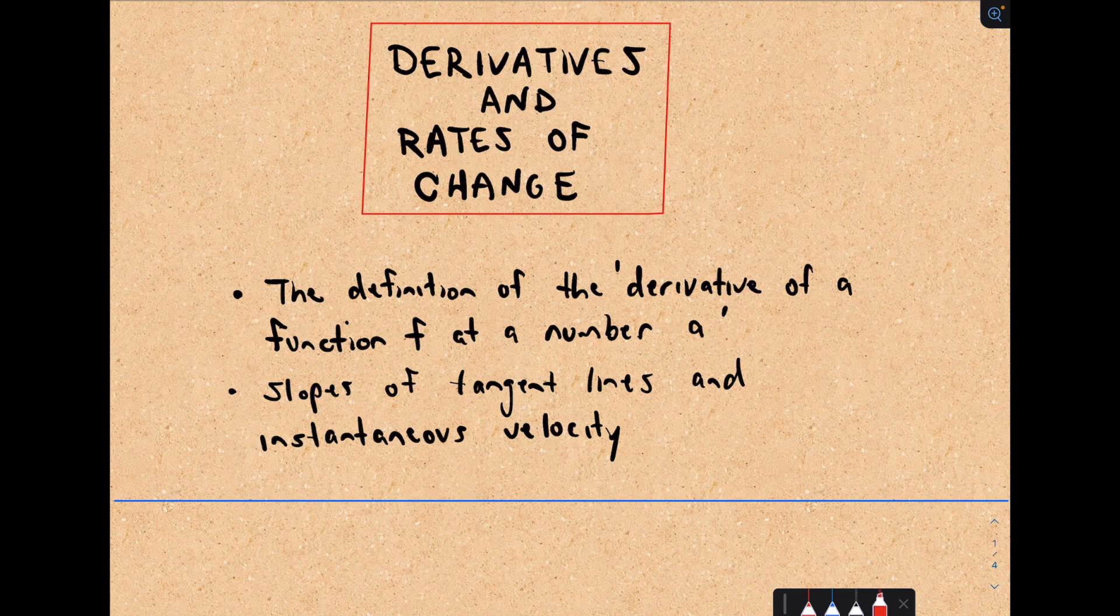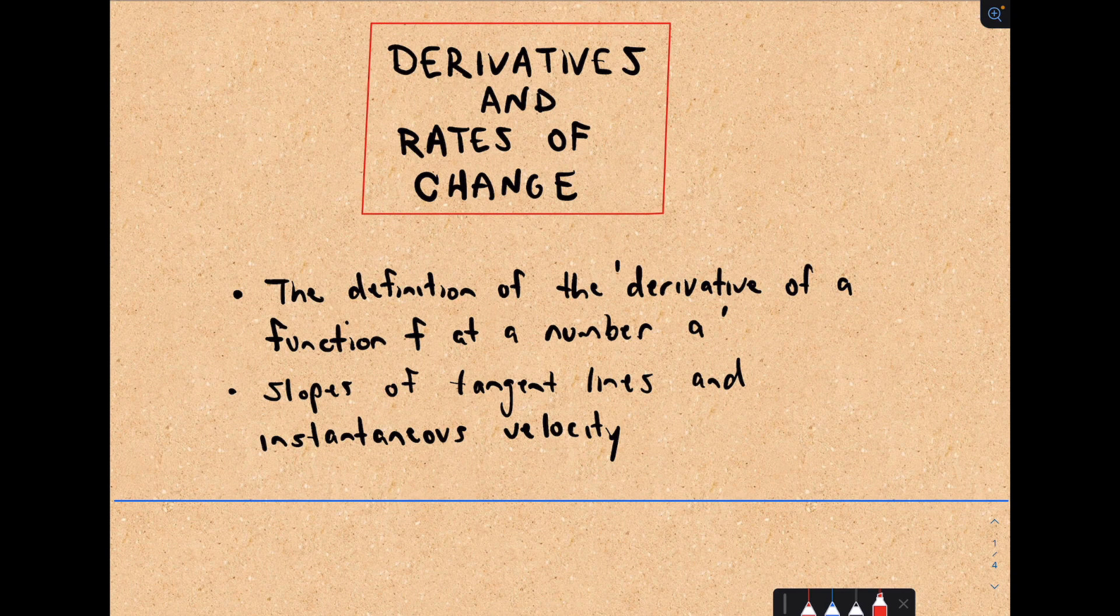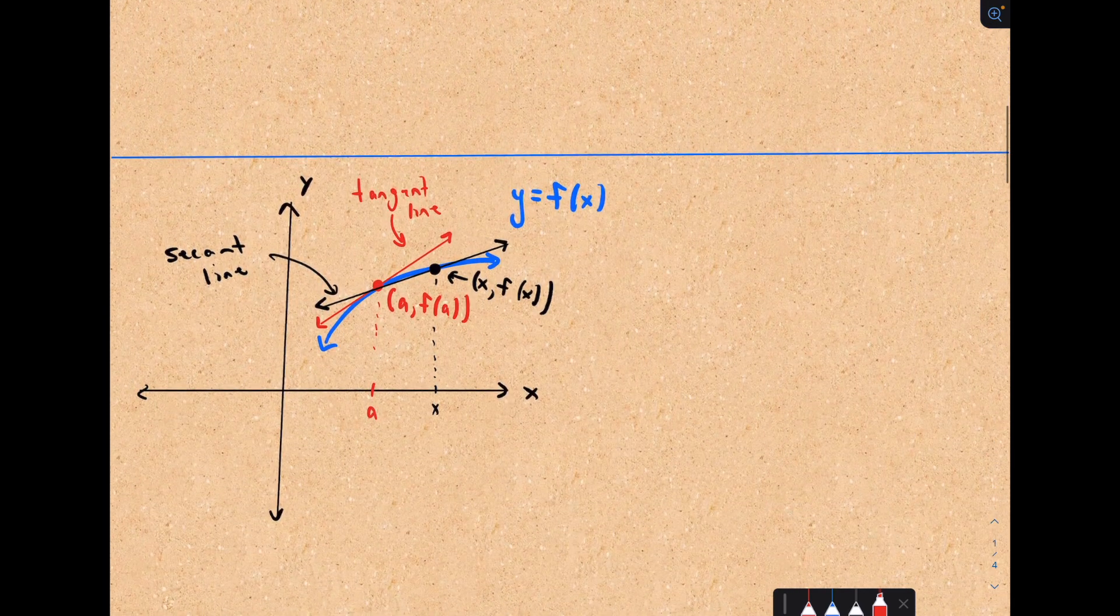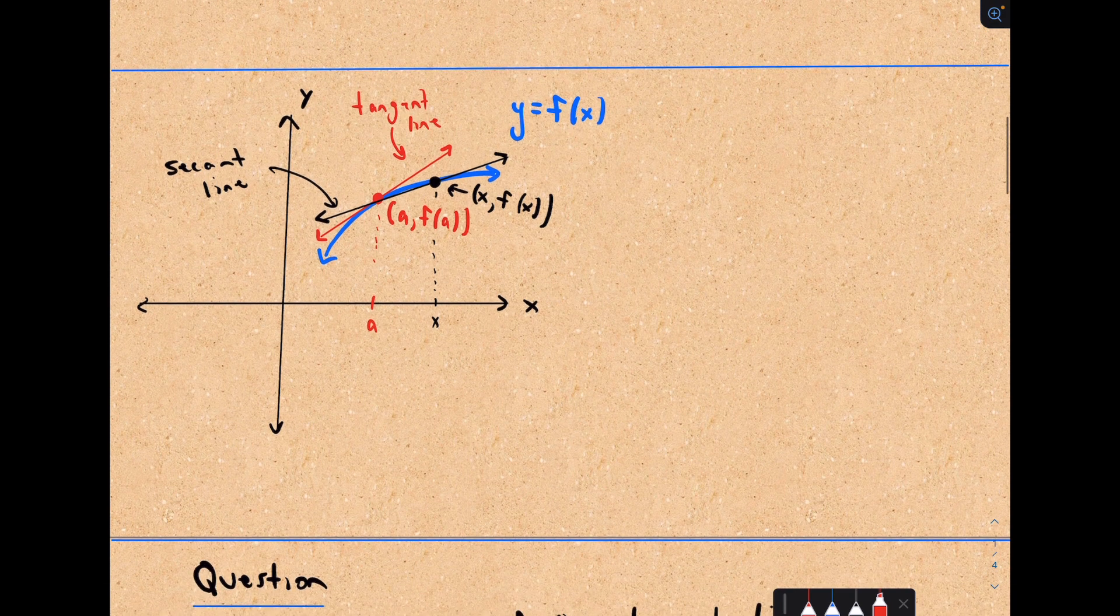Here we're going to talk about derivatives and rates of change. So we'll talk about the definition of the derivative of a function f at a number a, and then we'll talk about slopes of tangent lines and instantaneous velocity.